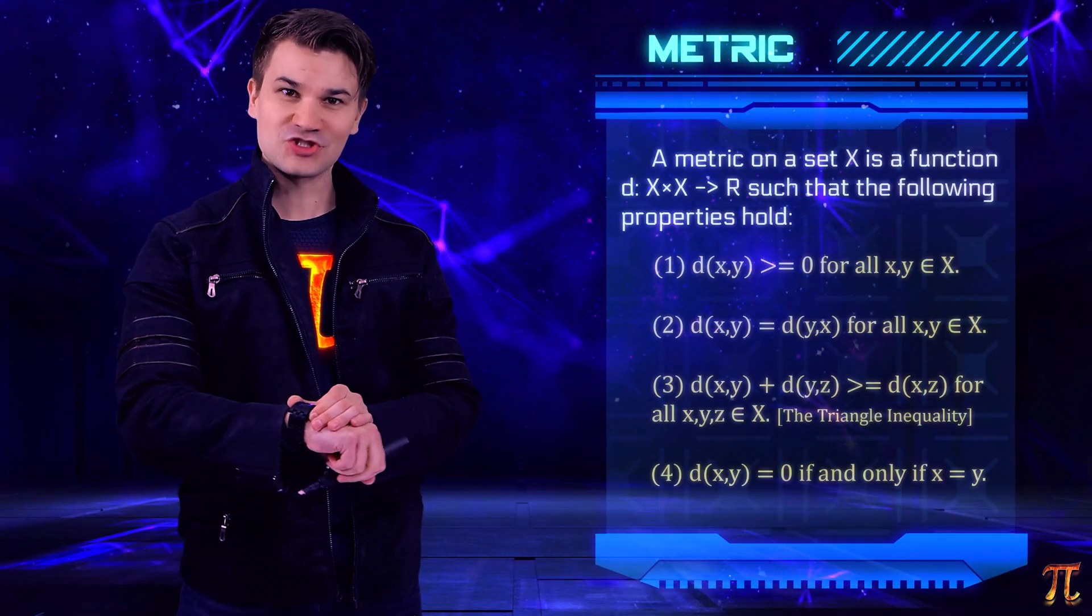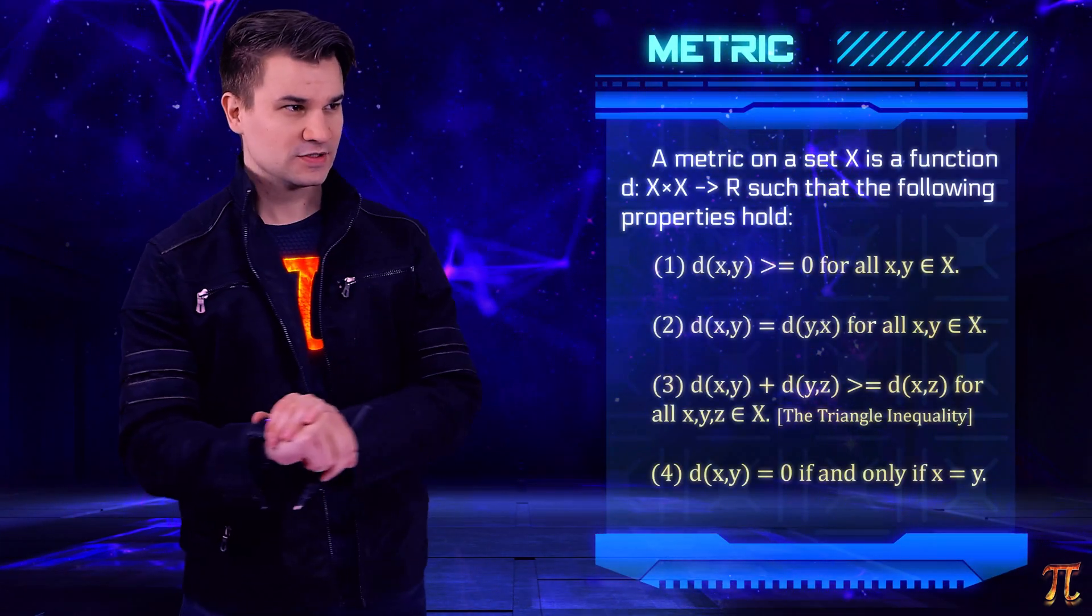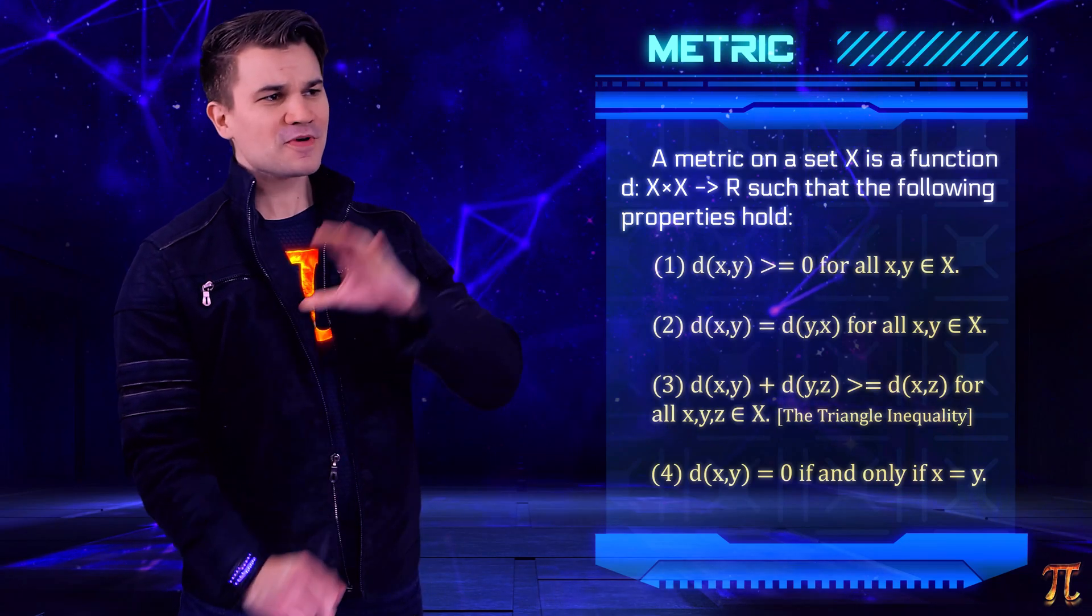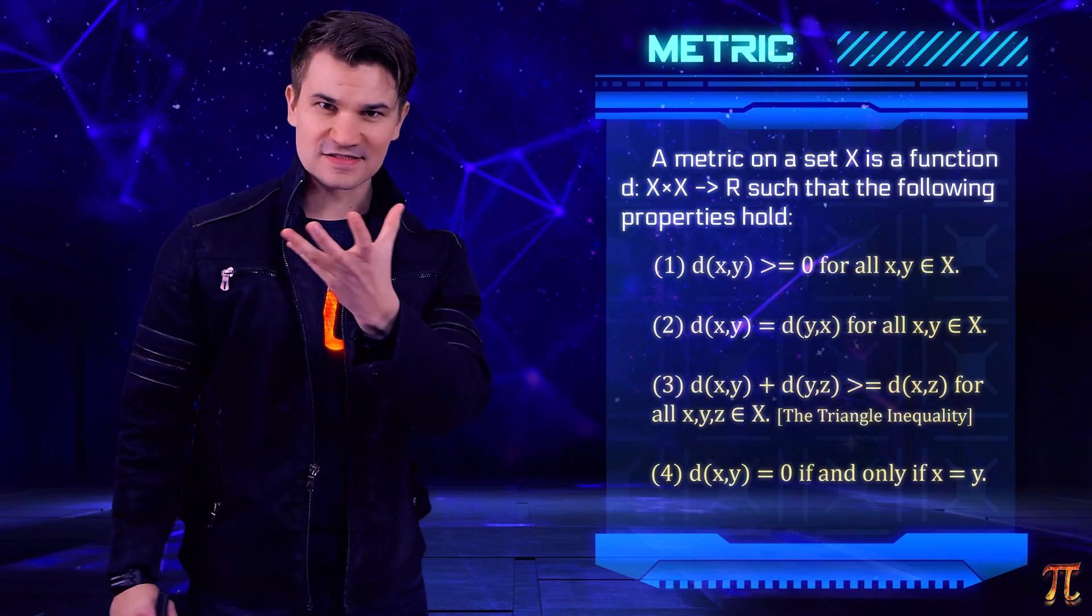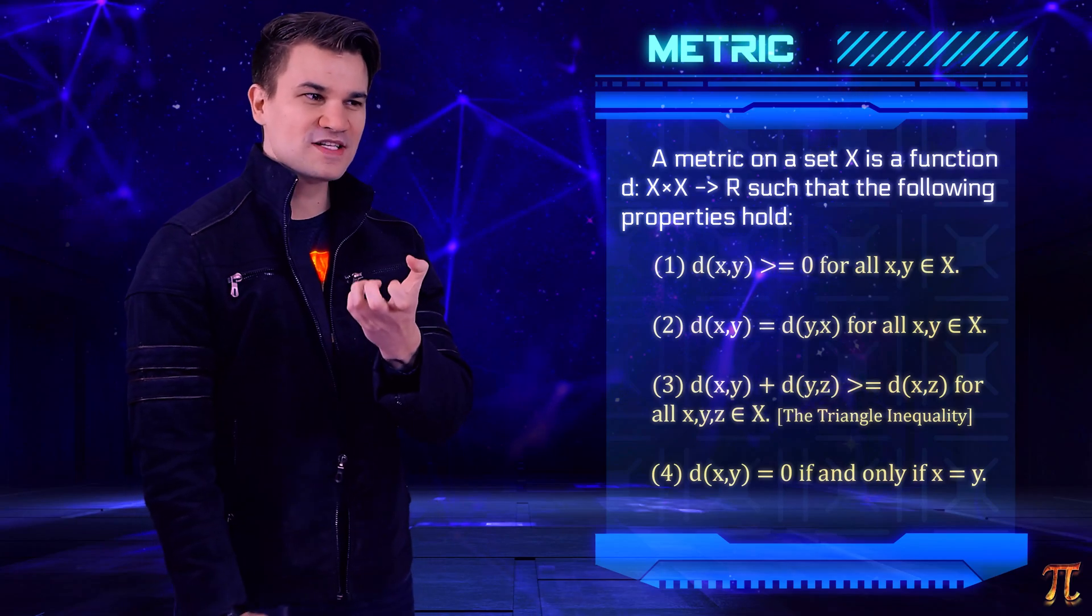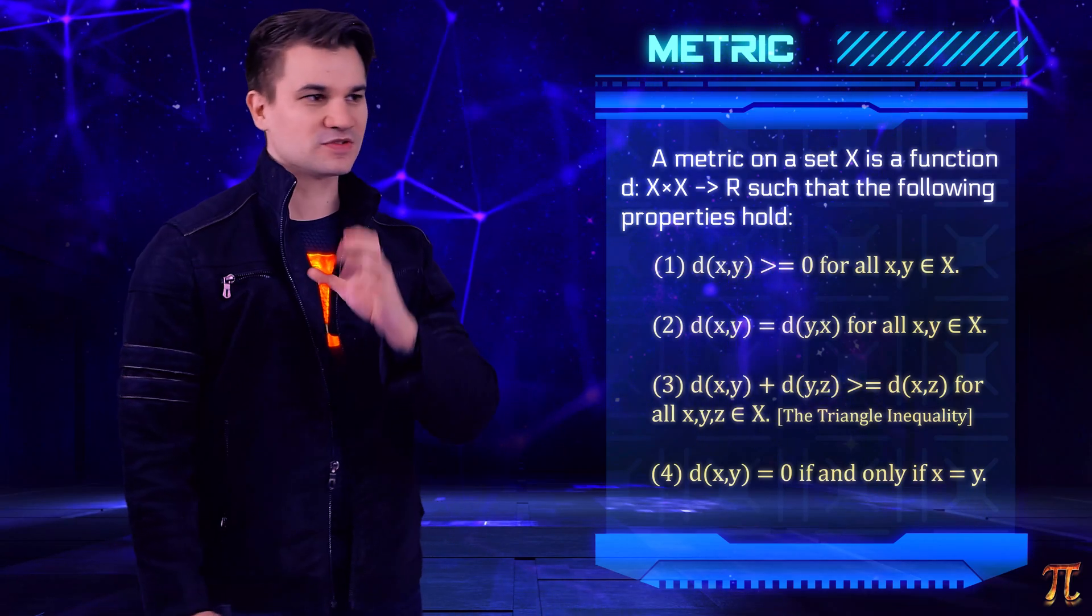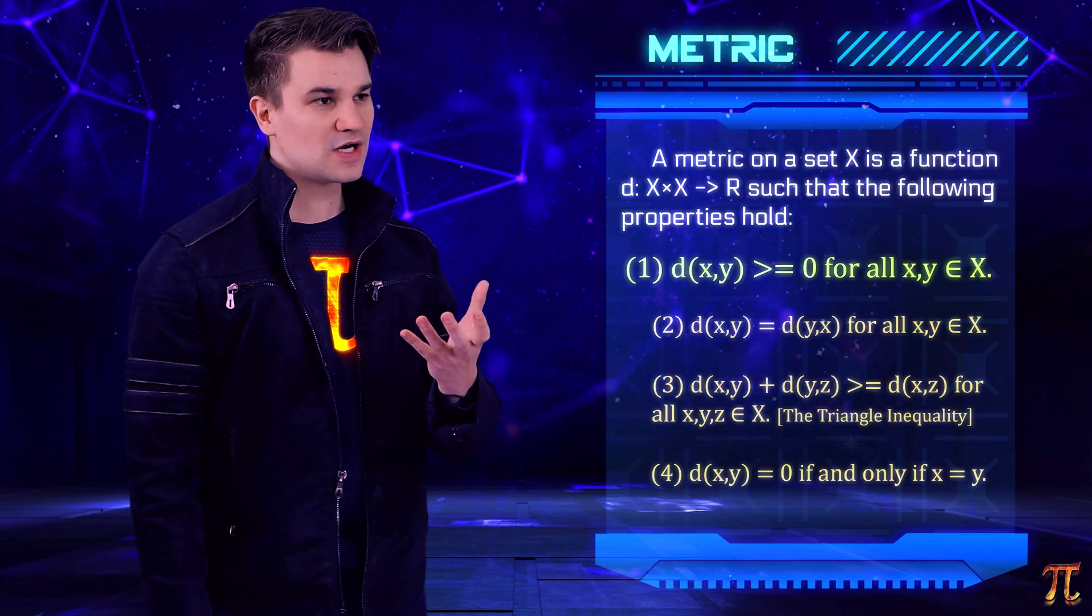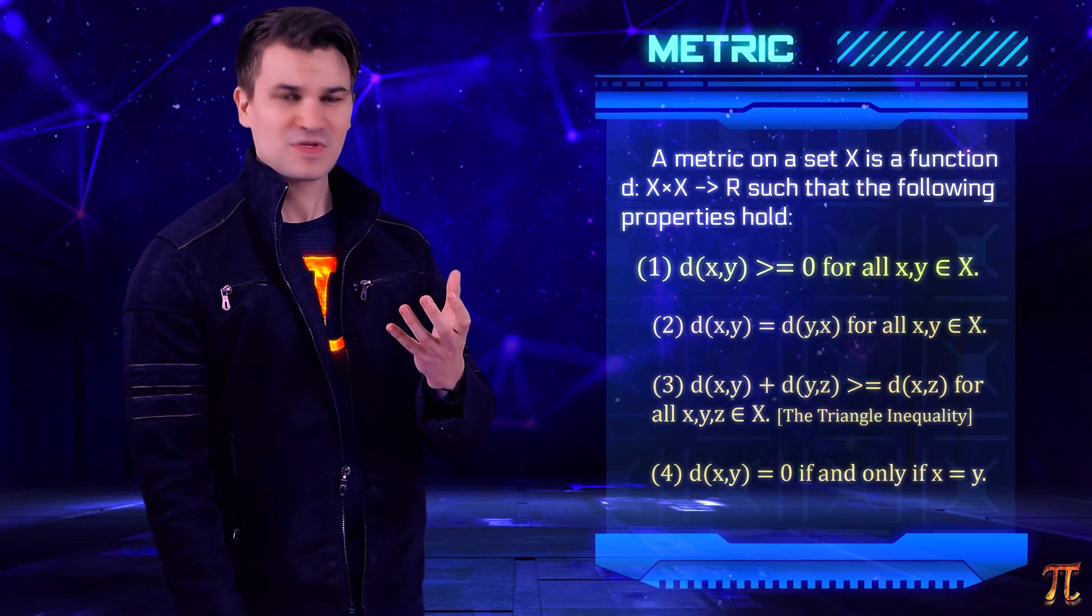If you look up the definition of a metric in most textbooks, you'll see something like this: it's a function that takes two elements of your set to a real number and has some properties. These properties are meant to capture the essence of distance. Well, distances are positive, right? We don't have negative distances.